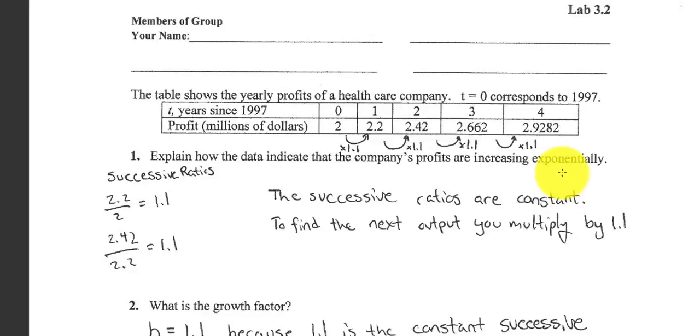So the ratio means division. Generally, I would divide the last two numbers and see what I get. Then I would divide the next two numbers, and then the next two numbers. So if you divide 2.2 divided by 2, you get 1.1. If I divide 2.42 divided by 2.2, I get 1.1.